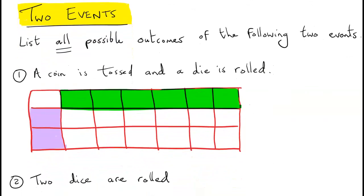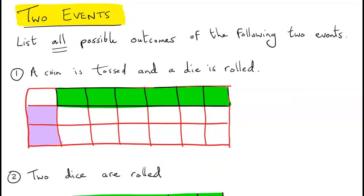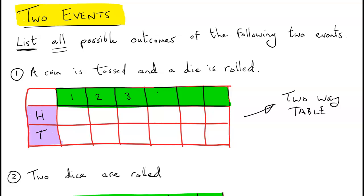Now what if 2 events take place — say I roll a dice and also flip a coin — and I want to list all the possible outcomes? I would draw up a two-way table. Tossing a coin has 2 outcomes: heads or tails. Rolling the dice has 6 outcomes — it has to land on one of those numbers, and the coin has to land on heads or tails.